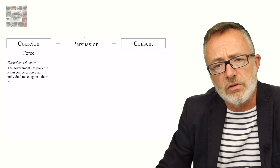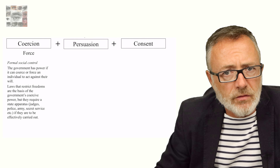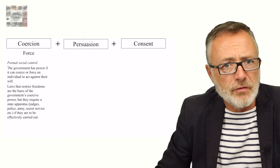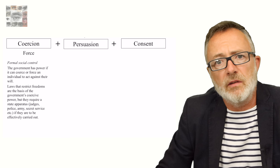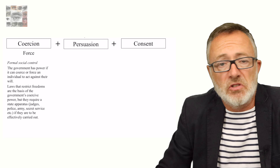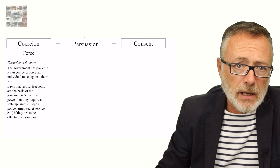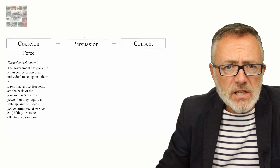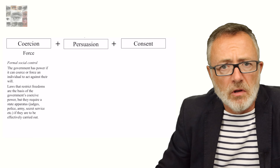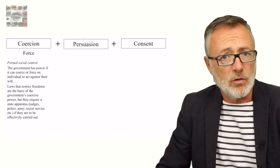So what does coercion look like? Laws that restrict the individual citizen's freedoms are the basis of a government's coercive power. But they require a state apparatus of judges, the police, the army, secret service, etc., if these laws are to be effectively carried out. An individual will therefore obey the state because they fear the power of the agencies of state coercion.